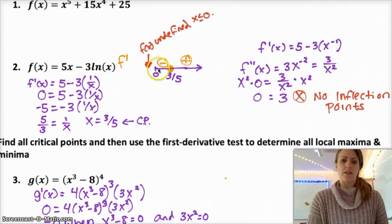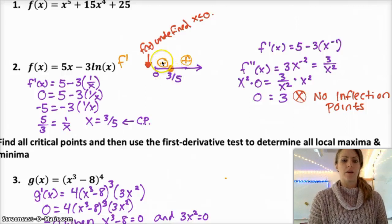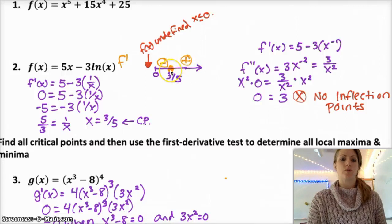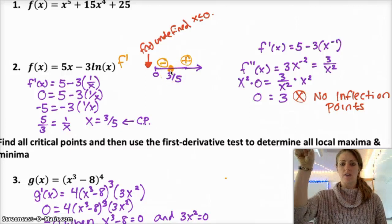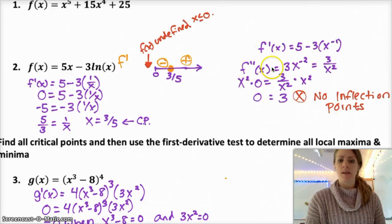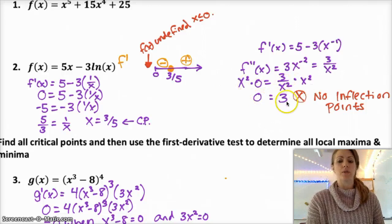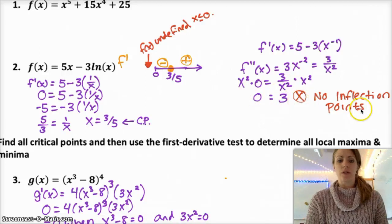The derivative from 0 to 3 fifths — if you plug in a value in between, like maybe 1 fifth, you get a negative number. If you plug in something to the right, like maybe 1, you get a positive number. So 3 fifths goes from decreasing to increasing — this is a local minimum. If you do f double prime, you get 3 over x squared. I wrote 1 over x as x to the negative 1 and then used the power rule. If you multiply both sides by x squared, you get 0 equals 3, which is not solvable. So there are no inflection points.